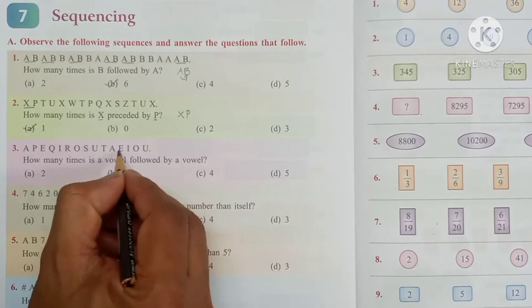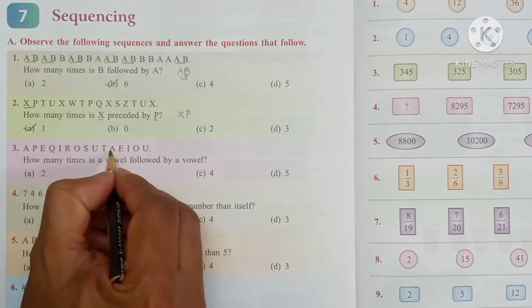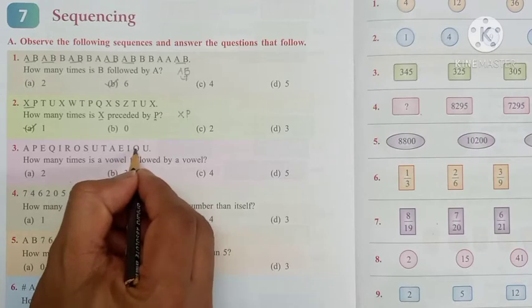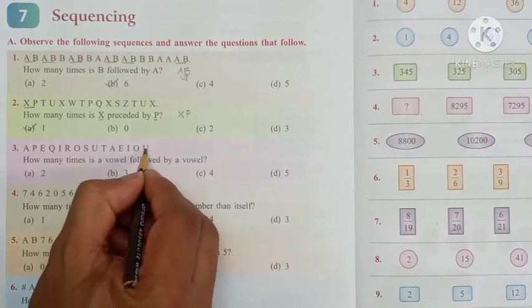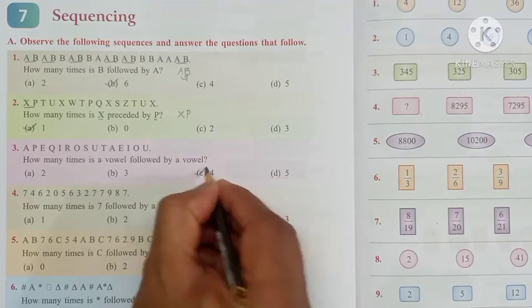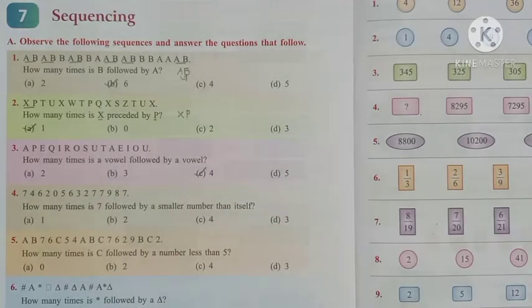For E we have an oval - 1. For I, 2. O, 3. U, 4. So such combinations are in total 4. So option C is the right one.